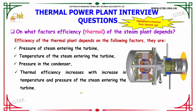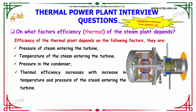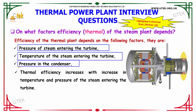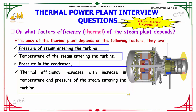On what factors does the thermal efficiency of the steam power plant depend? The efficiency of the thermal plant depends on the following factors: the pressure of steam entering the turbine, the temperature of steam entering the turbine, the pressure in the condenser, and the thermal efficiency increases with an increase in temperature and pressure of the steam entering the turbine.